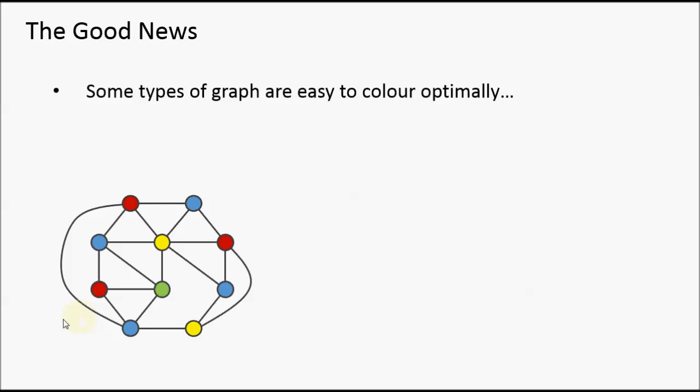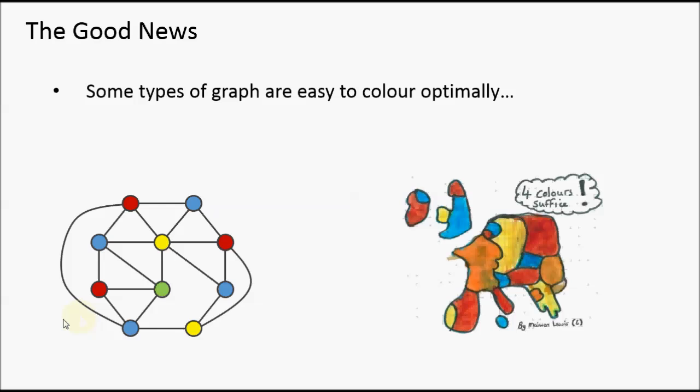And this relates to the problem of coloring the countries of a map. What you can see here on the right is a map of Europe that my six year old daughter drew. And you can see that I've managed to color all of the countries so that no bordering countries have the same color.